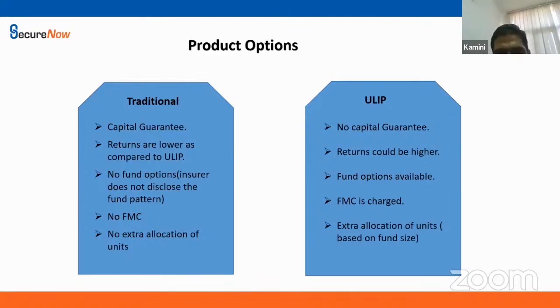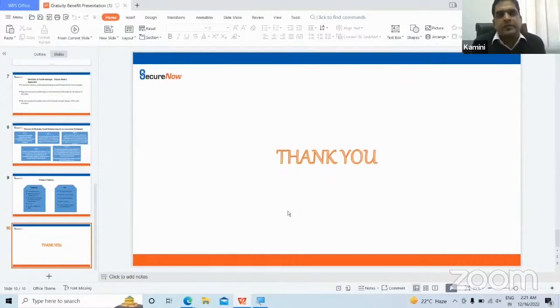There are two types of products broadly available in the market: one is a traditional product and the other one is a unit-linked insurance plan (ULIP). That covers the basics of Gratuity fund management.